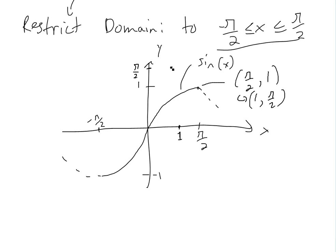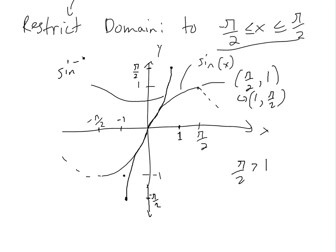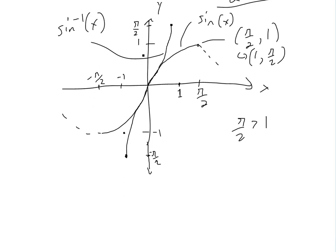So this line actually looks something like this, and this is a reflection off of the y equals x line. So this is how this graph would look, and this would be arc sine of x — that's the inverse of it. It's a reflection off of the y equals x line.